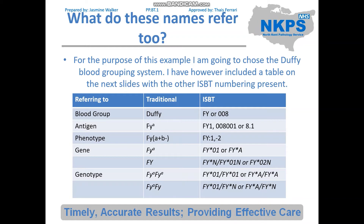If we talk about FYA, the ISBT denotation for that would be FY1, because it's the first antigen in that blood group, or 008001. For phenotypes, if a patient is FYA positive and FYB negative, we would denote it in the traditional format as FYA+FYB-. In the ISBT format it would be FY:1,-2, because it has the first antigen present and lacks the second. You could extend this through the whole Duffy system going to 3, 4, 5, and 6 if you had that information.